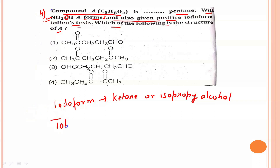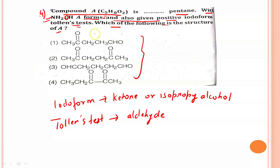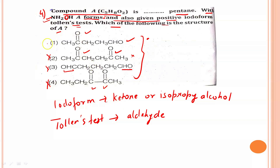The Tollens test is shown by an aldehyde group. Looking at the options: option one has both a ketone group and an aldehyde group, so it can give both tests — this is a possible answer. Option two has two ketone groups; it will show iodoform but not Tollens, so it is eliminated. Option three has an aldehyde group which gives Tollens, but it is a primary alcohol so it will not show iodoform — eliminated. Option four also has two ketone groups and will not give Tollens, so it is eliminated. The correct answer is option one.